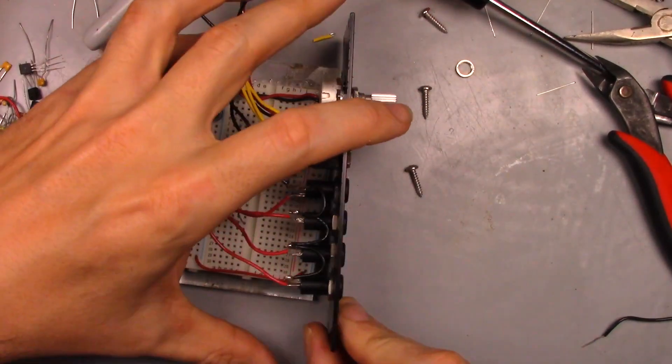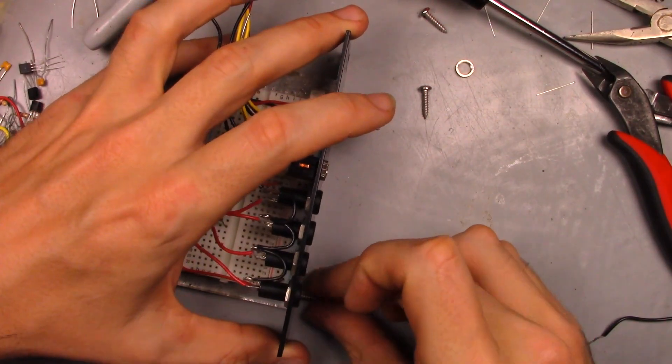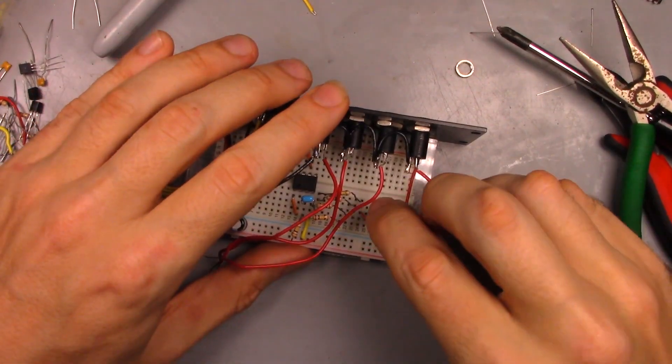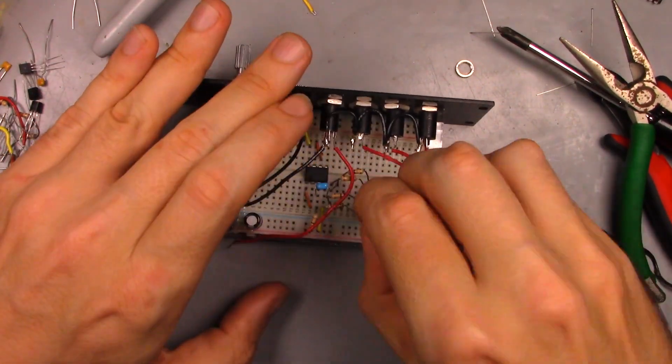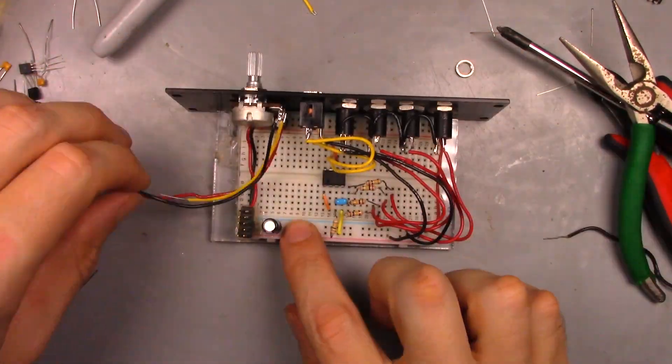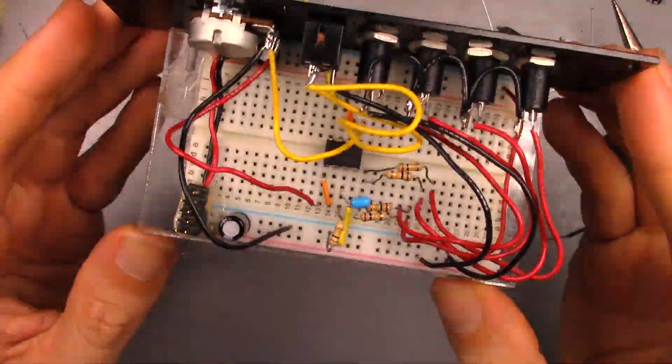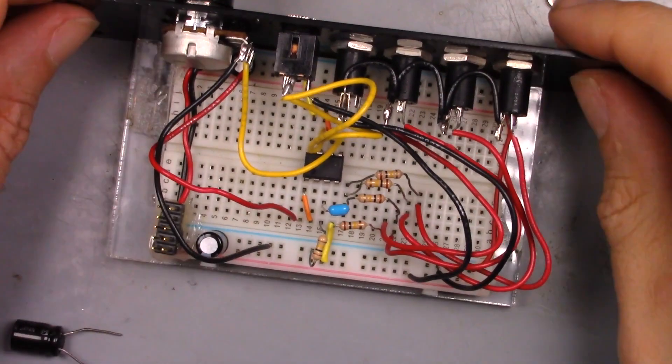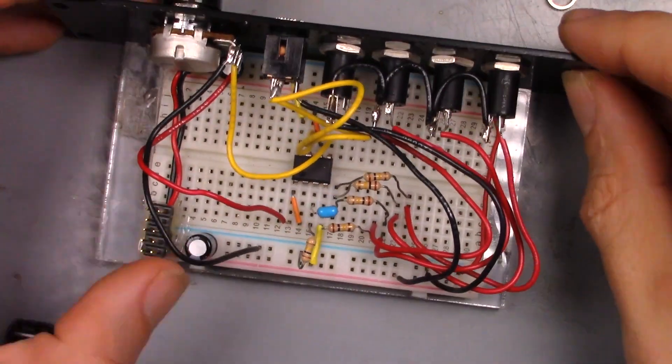Let's bring the faceplate in. Screw it into place, and with the final step being connect the potentiometer and the jacks to match the schematic. Well let's not forget the DC blocking capacitor on the output, shall we?